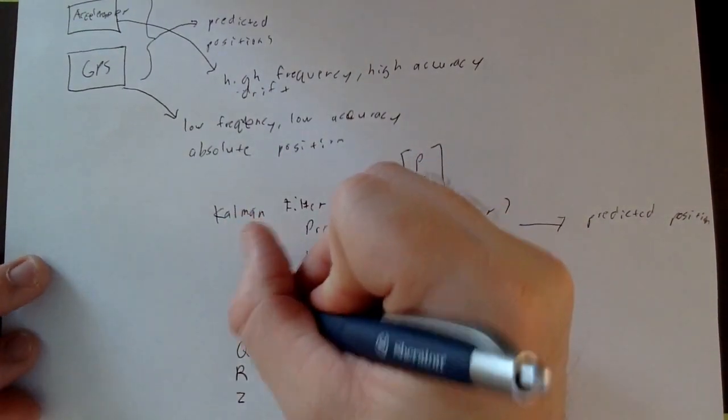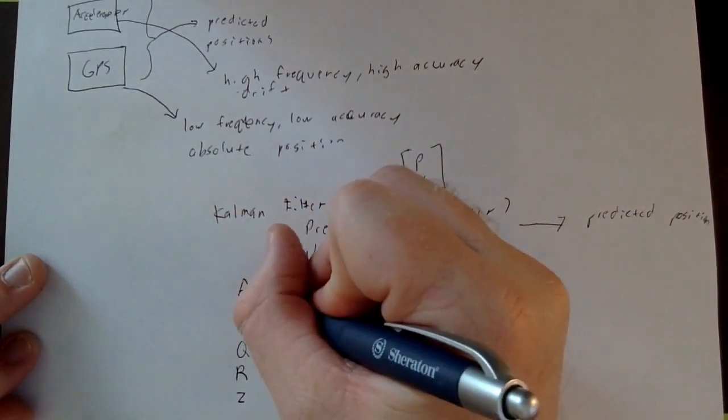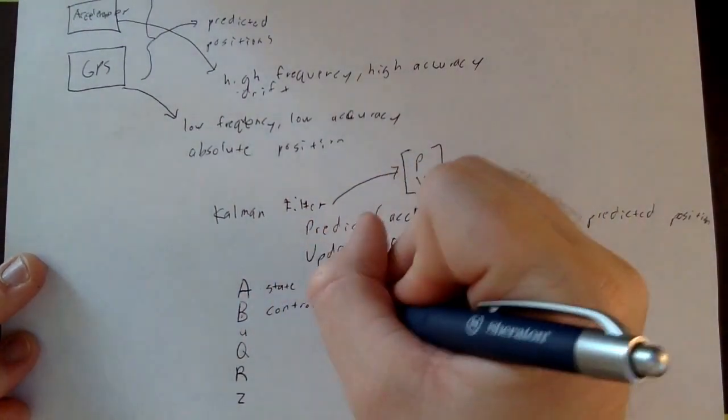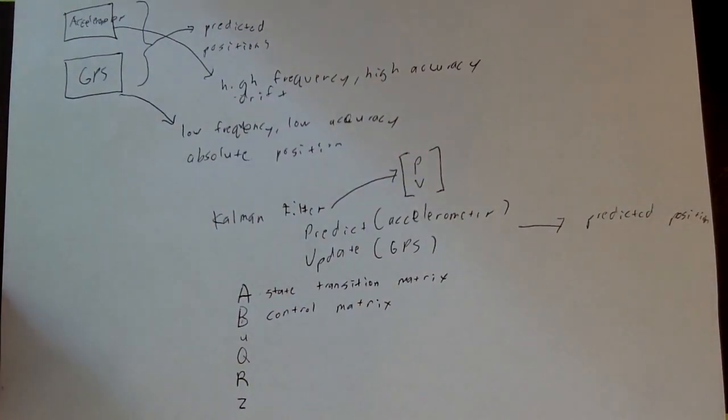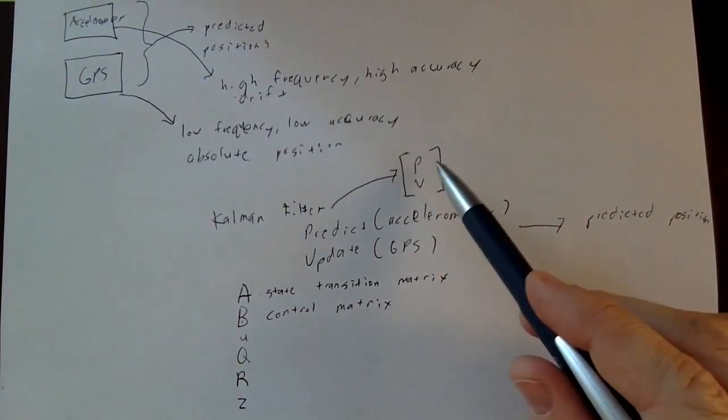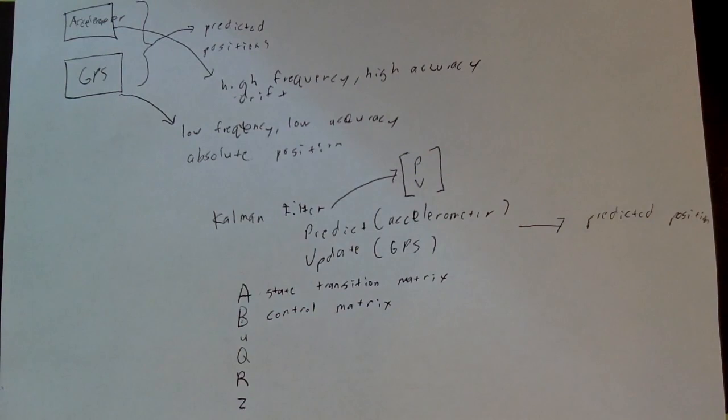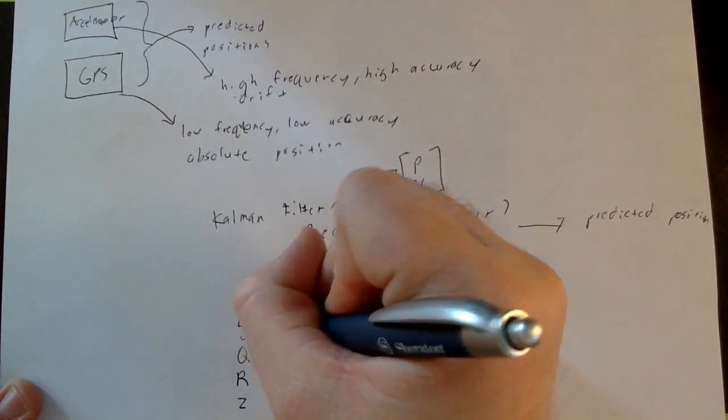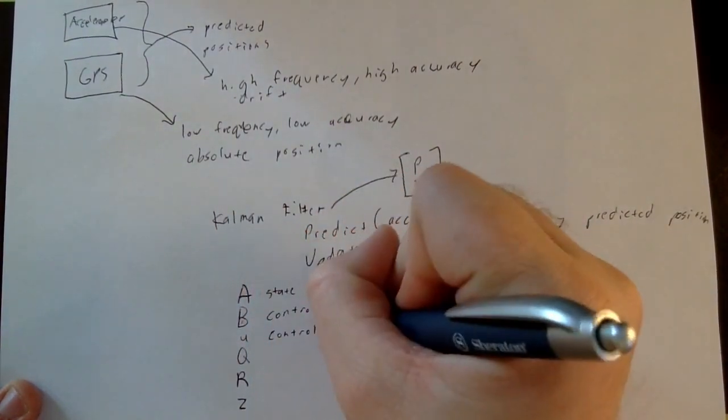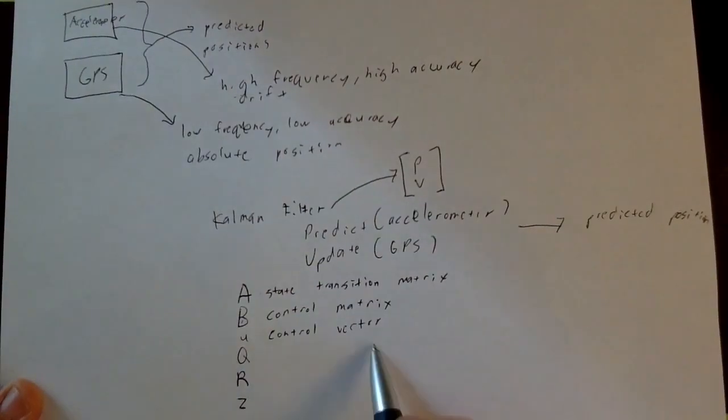B is going to be your control matrix. In my little space example, this is going to define, given new inputs to the system, how is that going to affect position and velocity. Your input in this case is U, which I'll call the control vector. To bring this full circle, your control vector is acceleration in this example. Your control matrix is what we multiply the acceleration by, and I'll go into this in better detail later.